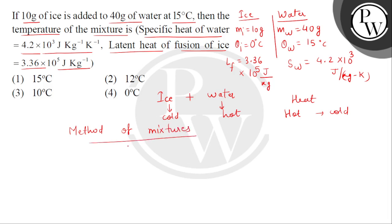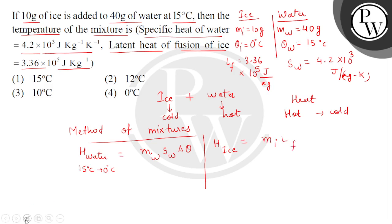We check the heat given by water as it cools from 15°C to 0°C. This equals mass of water × specific heat of water × change in temperature. Converting 40 grams to kg, and using specific heat 4.2 × 10³, with a temperature change of 15 − 0 = 15, we get 2,520 joules.